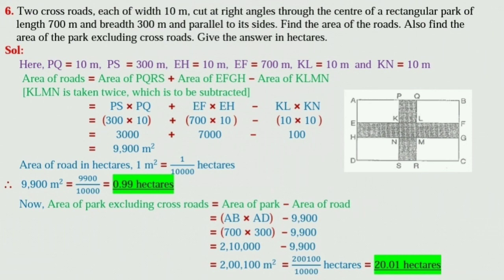Now, substitute all the values: is equal to 300 into 10 plus 700 into 10 minus 10 into 10, is equal to 3000 plus 7000 minus 100, is equal to 9900 meter square.